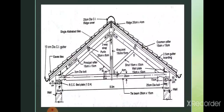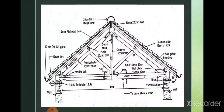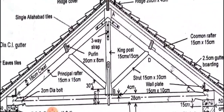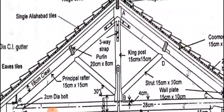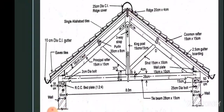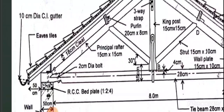This is the actual drawing of the king post truss which you will have to draw. The span is given as eight meters and the sizes of each and every member are given. The size of the king post is 15 centimeter by 15 centimeter — the breadth you see in the drawing is 15 cm and the inside thickness is also 15 cm. The size of the principal rafter is also 15 cm by 15 cm.